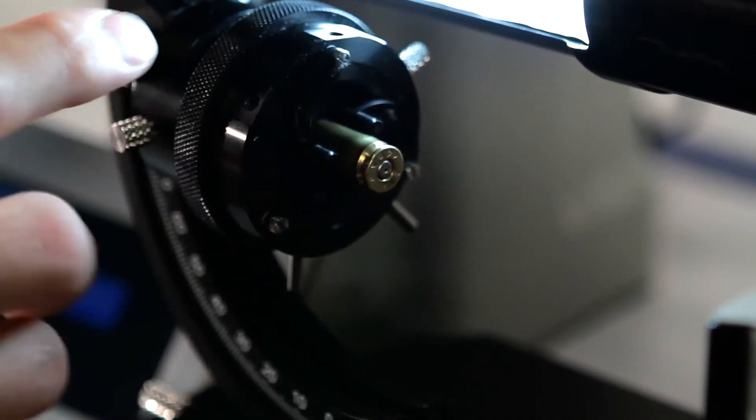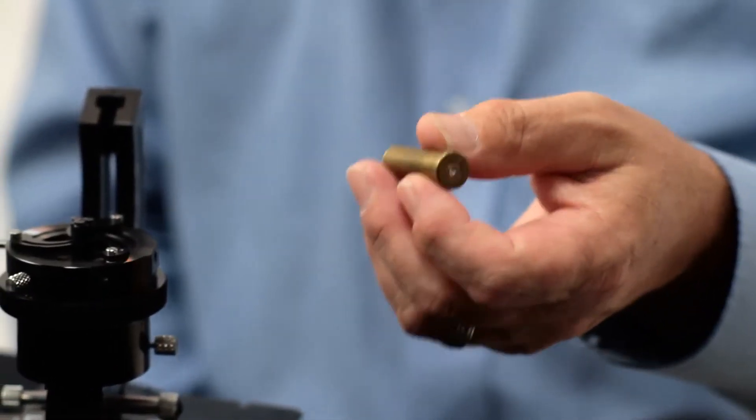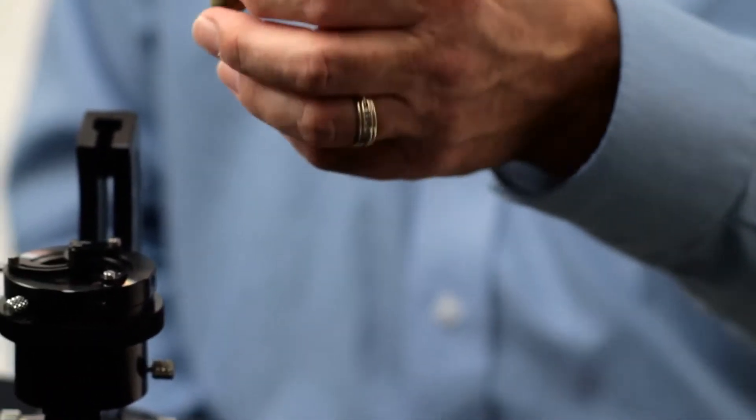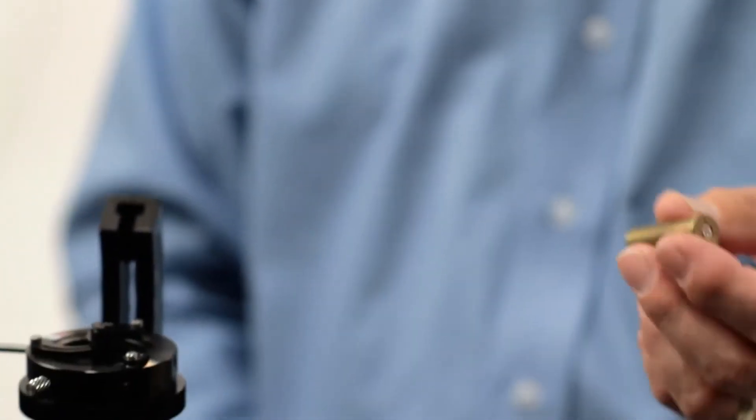Typically to hold a cartridge case in the past, your solutions have been to use wax or what I like to call the Helix Christmas tree brushes from gun cleaning.